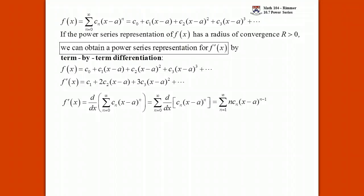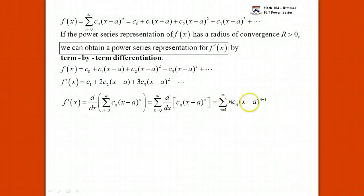Something strange happens about where it starts, though. The original power series representation started at 0. Well, now what's going to happen is that it's going to start at 1. Why the change? Well, if n was 0, what would be the first term? When n was 0, plug a 0 in for n — you get 0. So why start with a 0 term? You don't want to start with a 0 term. You want to start with a non-zero term, so you make it start at 1 instead of starting at 0.